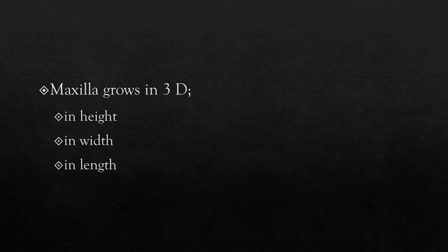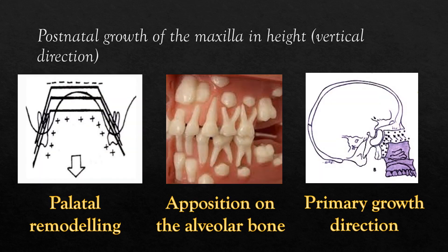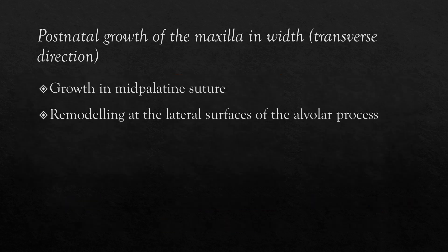Maxilla grows in three dimensions: in height, in width, and in length. Maxilla follows Enlow's V principle during postnatal growth in height, with resorption on the nasal side and apposition on the oral side. Besides palatal remodeling, there is continued apposition of alveolar bone as teeth erupt. The direction of growth also increases the height of the maxilla. Postnatal growth of the maxilla in height occurs with growth in the mid-palatal suture and remodeling at the lateral surfaces of the alveolar process.